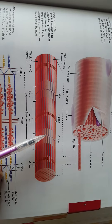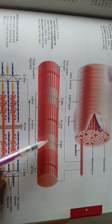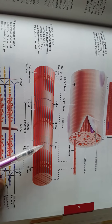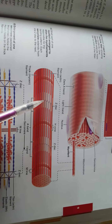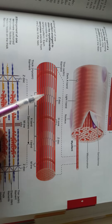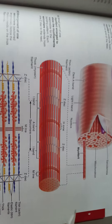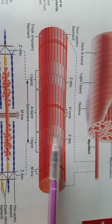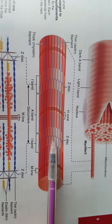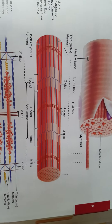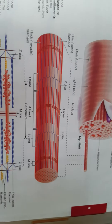A sarcomere is the functional contracting unit within a myofibril. The sarcomere goes from z-disc to z-disc. Each z-disc is made up solely of actin, and it zigzags as it connects together — that's where you get the name z-disc, from the zigzag.